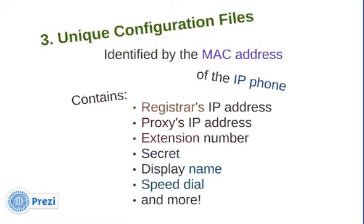The third thing the phone looks for is a unique configuration file. It's identified by the MAC address of the IP phone and contains things like the registrar and proxy IP address — which could be two different servers or the same server — the extension number, the secret (which is the password), a display name, speed dial, and more.